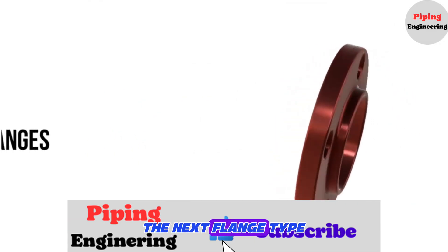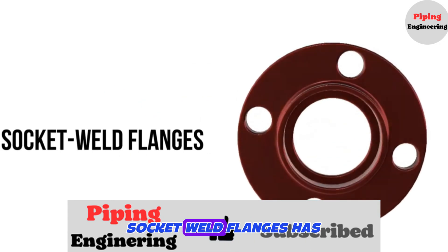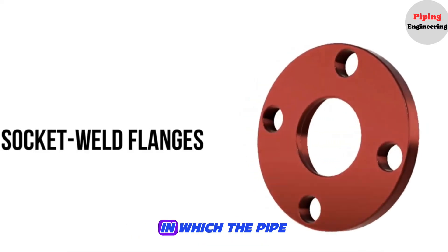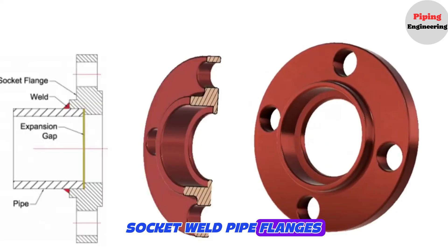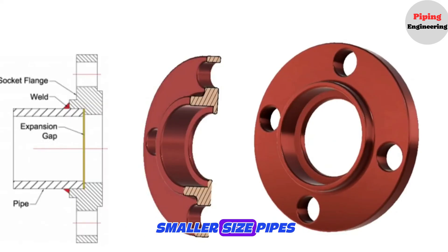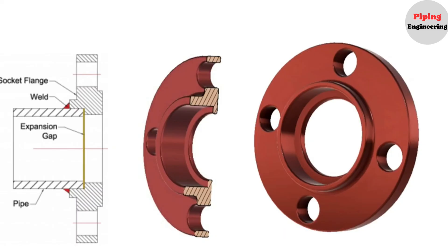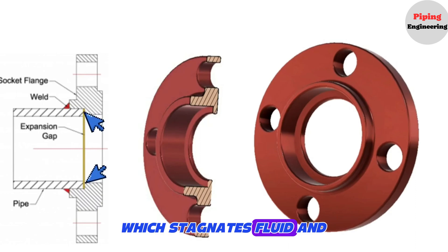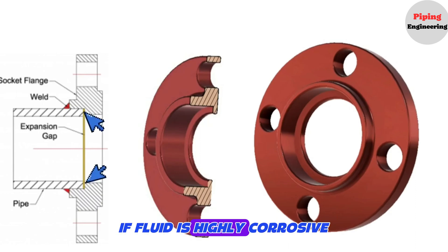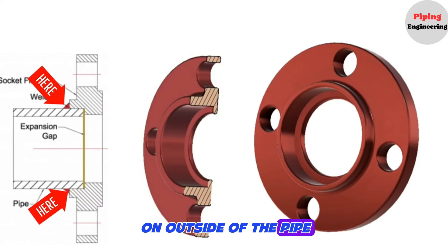The next flange type is socket weld flanges. Socket weld flanges have a female socket in which the pipe is fitted. They are typically used on smaller-size pipes and only suitable for low-temperature applications. There is a small pocket after the pipe to accommodate thermal expansion of the pipe, which stagnates fluid and can cause corrosion if the fluid is highly corrosive. They are welded only on the outside of the pipe.